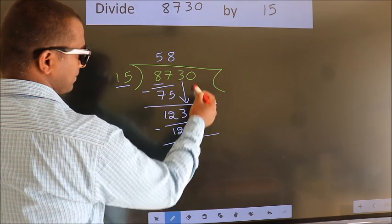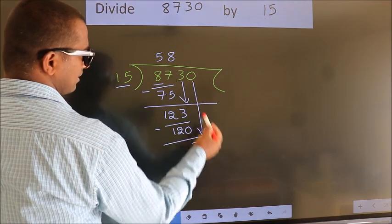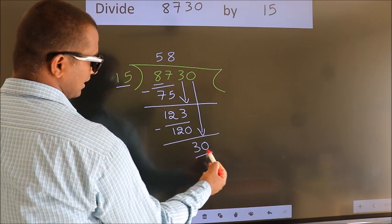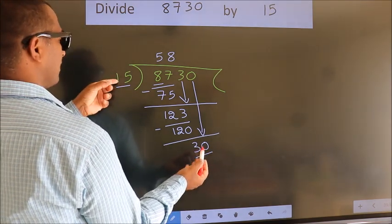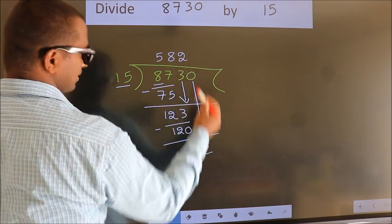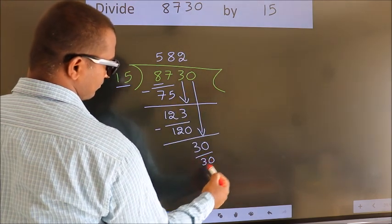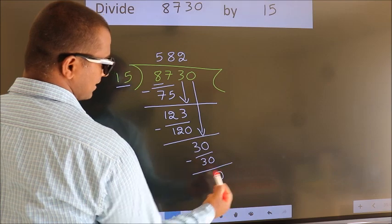After this, bring down the beside number. So, 0 down. So, 30. When do we get 30 in the 15 table? 15 twos, 30. Now we subtract. We get 0.